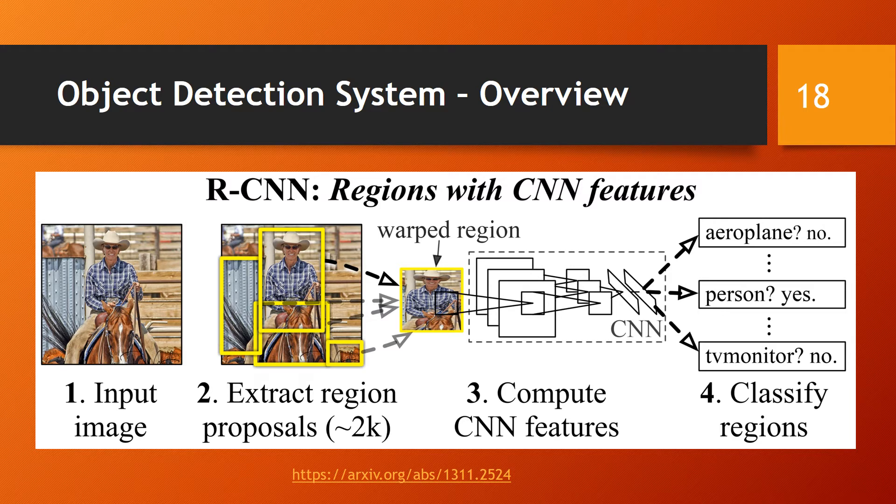This is an overview of the RCNN object detection system. It takes an input image and extracts around 2,000 category-independent bottom-up region proposals. Then it computes features for each proposal using a large CNN. Finally, it classifies each region using class-specific linear SVMs.